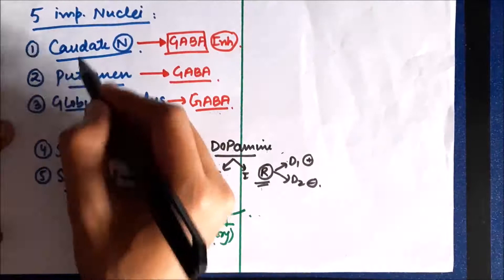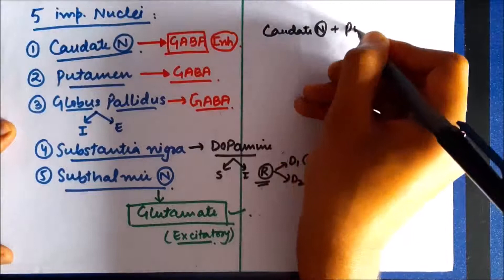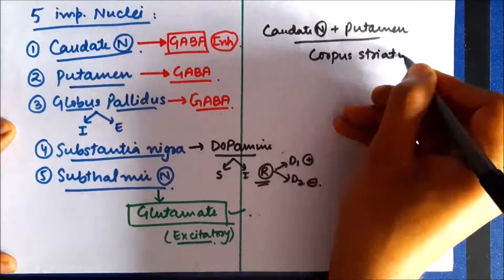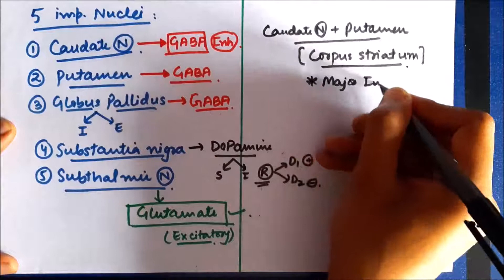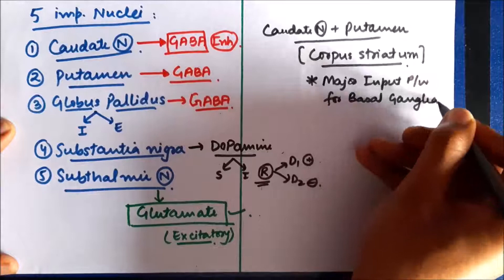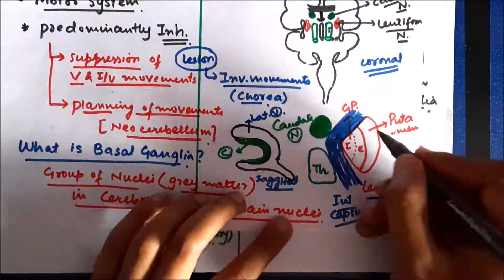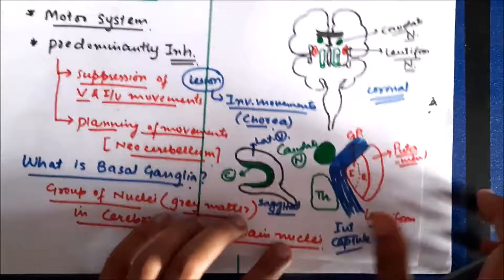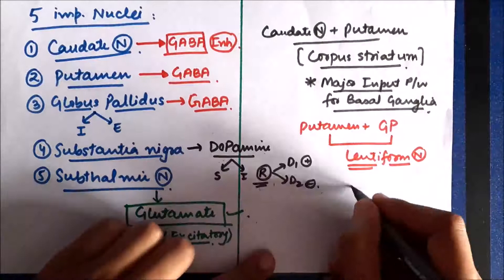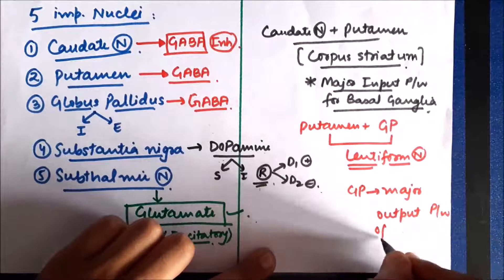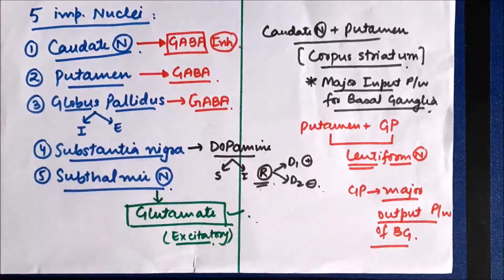Caudate nucleus and putamen together are called the corpus striatum, and this is the main input pathway for basal ganglia — all signals going to basal ganglia pass mainly through these two nuclei. Putamen and globus pallidus together form the lentiform nucleus, with putamen on the lateral side and globus pallidus on the medial side. Globus pallidus is the major output pathway for basal ganglia — signals going out to the cortex or other parts pass through the globus pallidus.